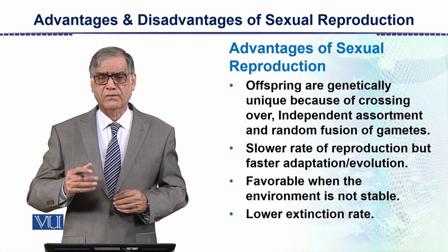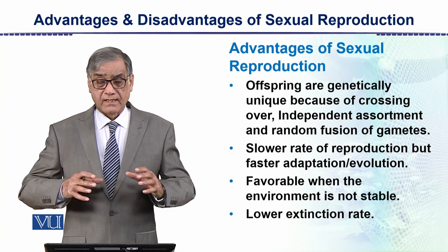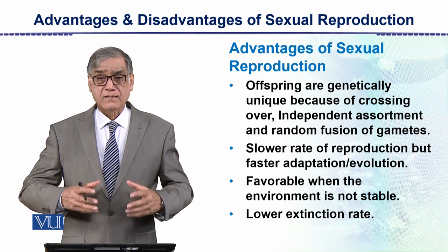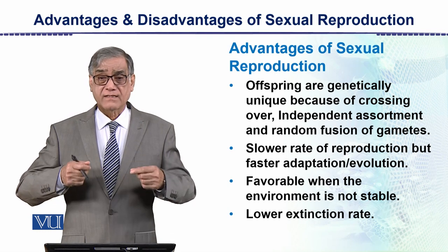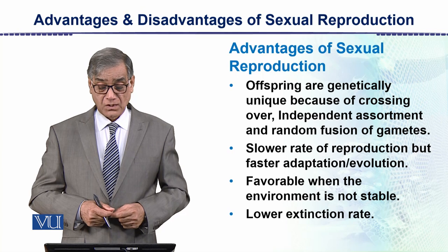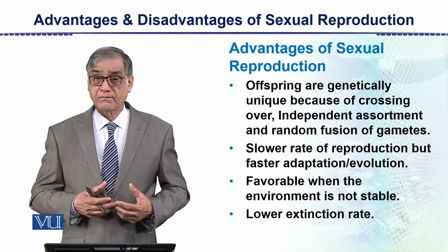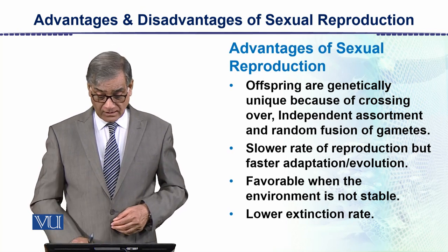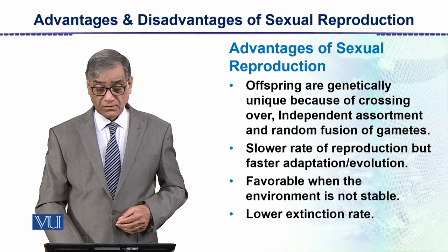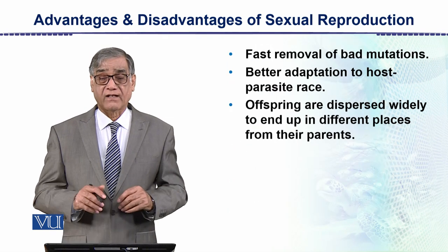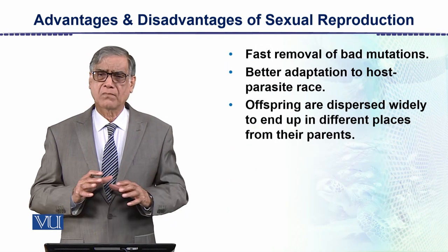Sexual reproduction is favorable when the environment is not stable. When the environment has a lot of fluctuations — temperature-wise, humidity-wise — organisms formed through sexual reproduction have an increased survival rate. As a result, the extent of extinction rate is very low.